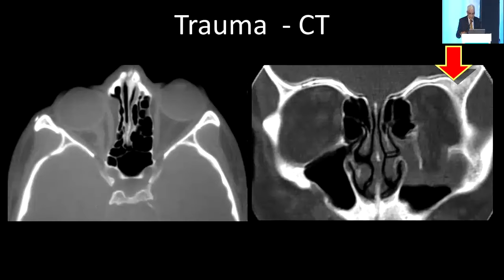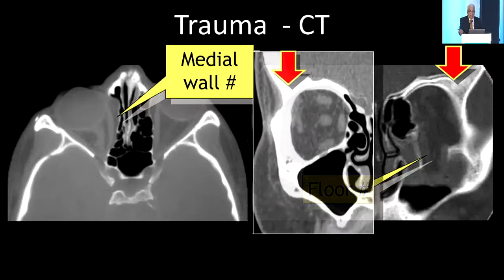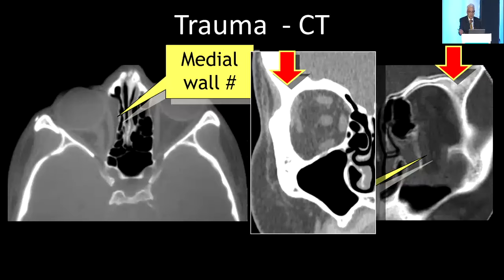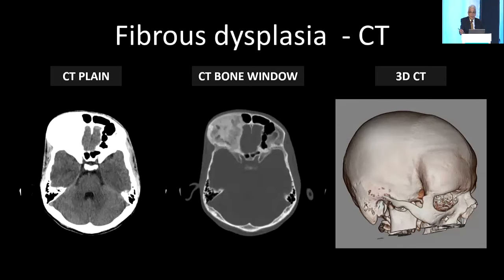In trauma, you can see bone window CTs showing fractures of the medial wall and the floor very clearly, because CT images bone well. It can also show you the interior bone structure. By contrast, on a normal CT the bone is entirely white. This form of imaging where you image just the bone is called bone window CT. Also very commonly used are osseous lesions of the orbit — for example, fibrous dysplasia — where you can see the interior of the bone on bone window.